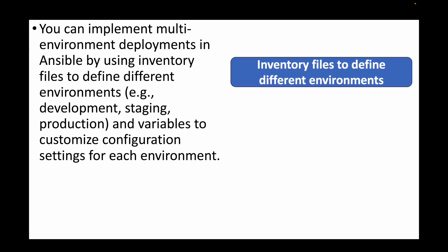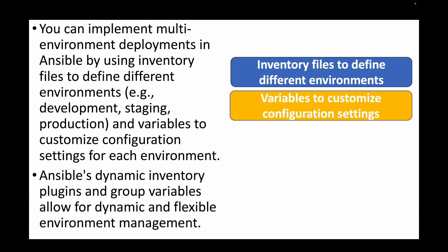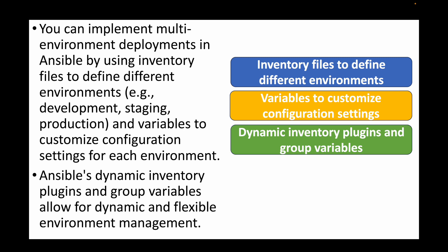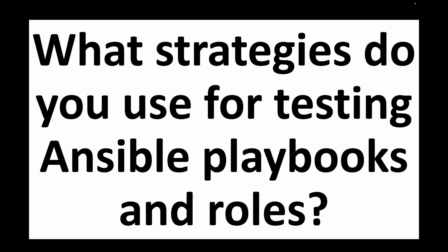The next question is: explain how you can implement multi-environment deployments using Ansible. We can implement multi-environment deployments by using inventory files to define different environments. We maintain separate inventory files for each environment — for example, a production inventory file and a dev inventory file. We also use variables to customize configuration settings for each environment. Ansible also provides dynamic inventory plugins and group variables, allowing for dynamic and flexible environment management.